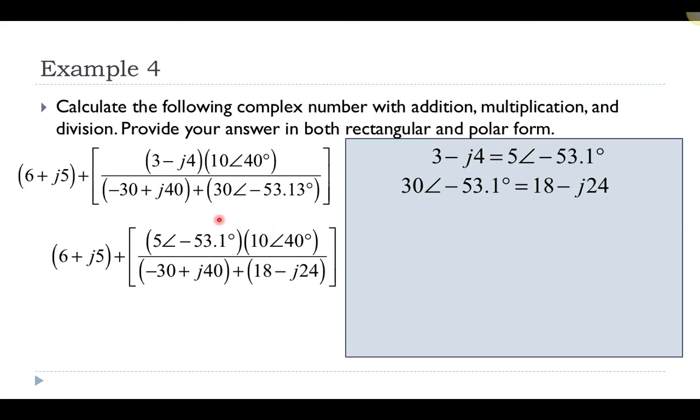So I take 3 minus 4j and convert it to polar form: it has a length of 5 and an angle of negative 53.1. I also take the complex number at the bottom that is in polar form and convert it into rectangular form, replacing those terms in the expression. Now I have something where I can do multiplication on the top and addition on the bottom.